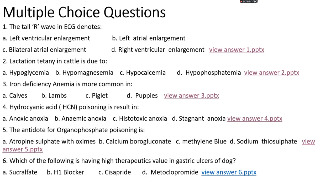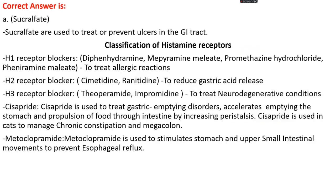Question number 6. Which of the following has high therapeutic value in gastric ulcer of dog? Options A, sucralfate; options B, H1 blocker; option C, cisapride; options D, metoclopramide. The right answer is option A, sucralfate. Sucralfate is used to treat or prevent ulcers in the GI tract.